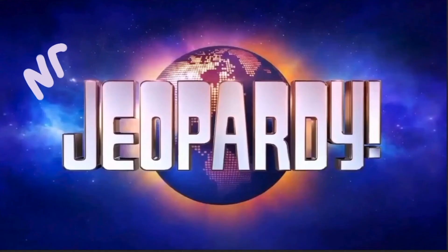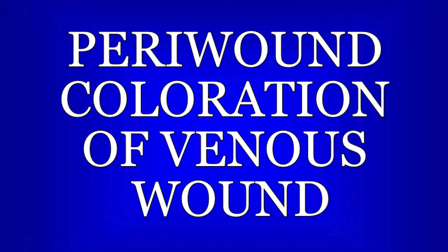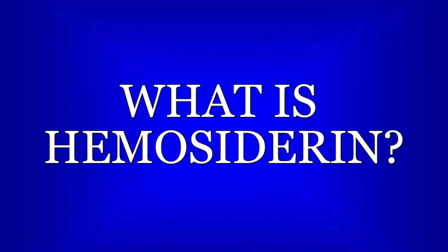Now it's time for NPTE Jeopardy! Pause the video now if you want time to read and think about the question. Excess blood collecting in the ankle can leak iron, which stains the skin brown, also known as hemosiderin.